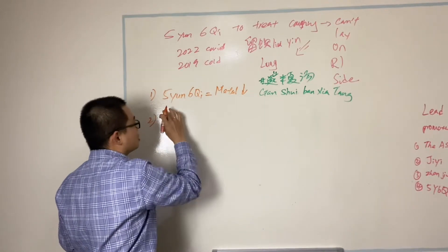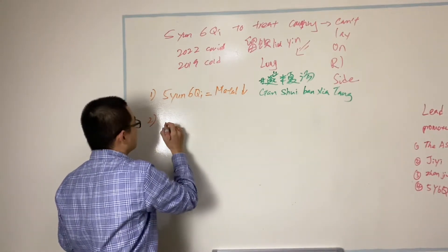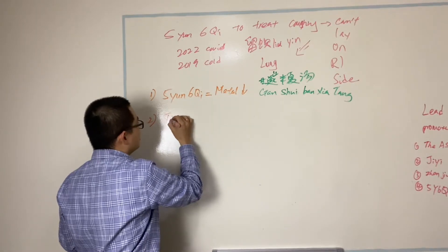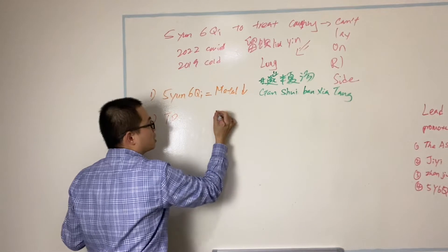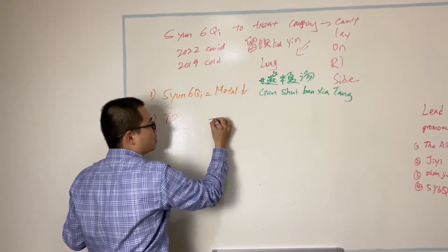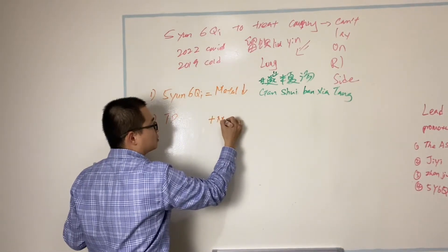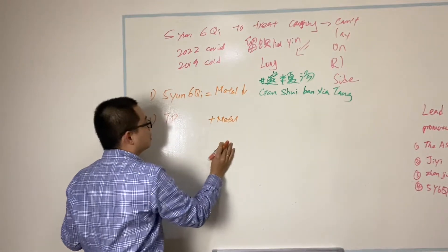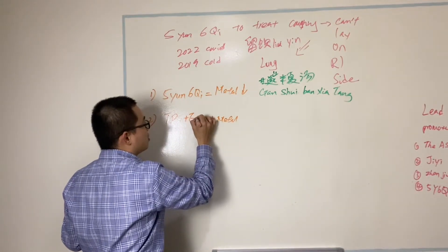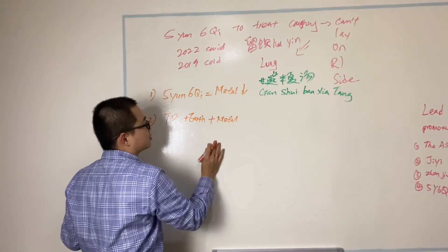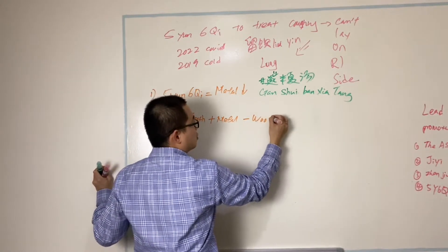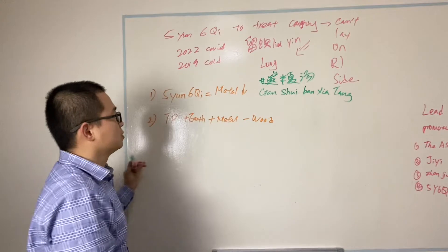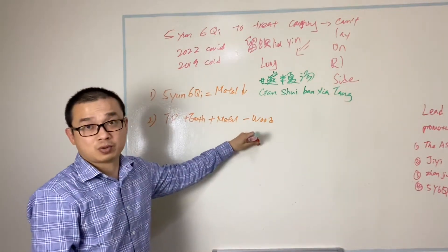Secondly, Treatment Principle. Treatment Principle is, this is metal weak. We have to tonify metal, then tonify earth, reduce wood. This is the Treatment Principle.